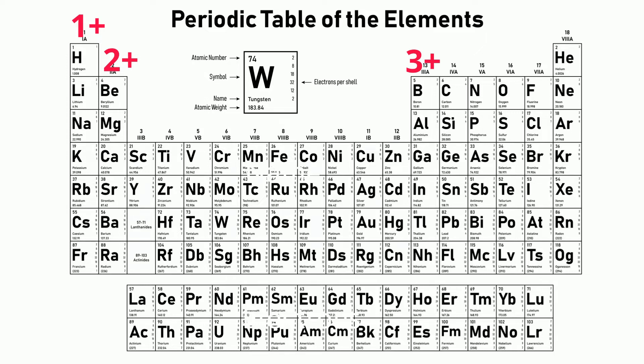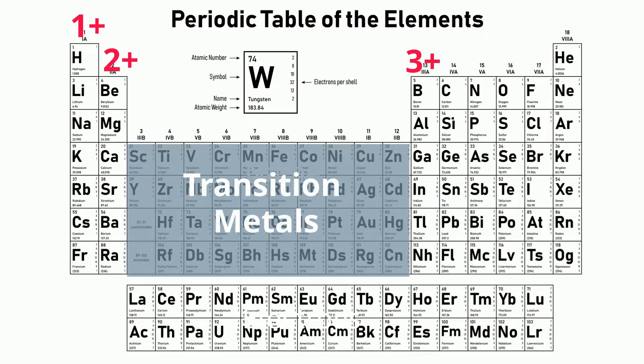Now, in contrast, most of the transition metals form cations with various positive charges. For these elements, there is no easy way to predict the charge of the cation that will be formed.